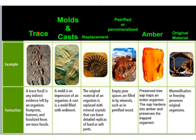The first type is a trace fossil. The key part is that this is not the organism itself — it's something the organism left behind. For example, footprints: whether human footprints or dinosaur footprints, it's not the actual organism we're finding a fossil of. It's an impression it made, a footprint it left behind.